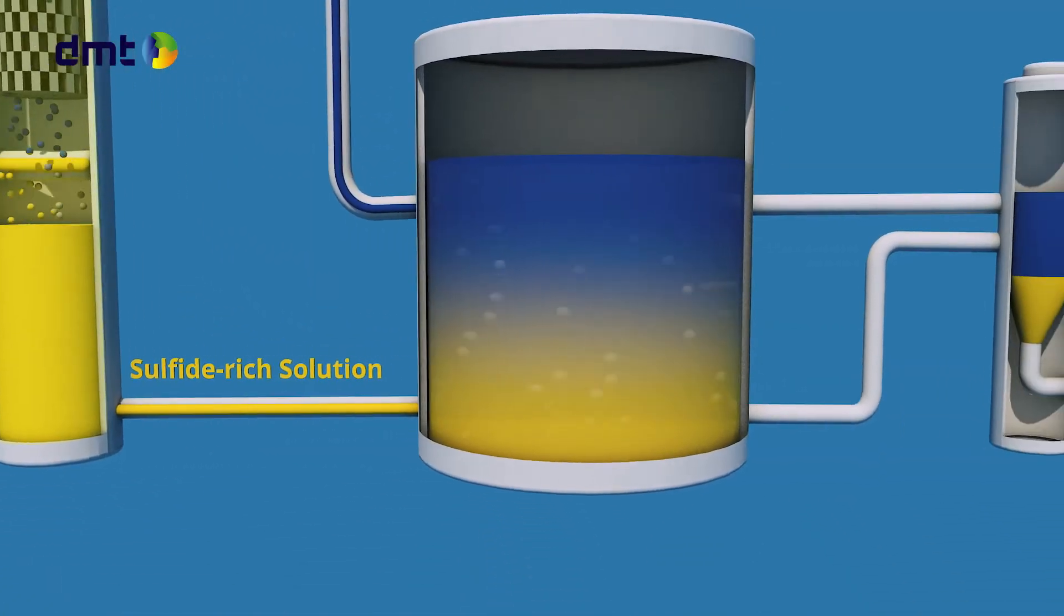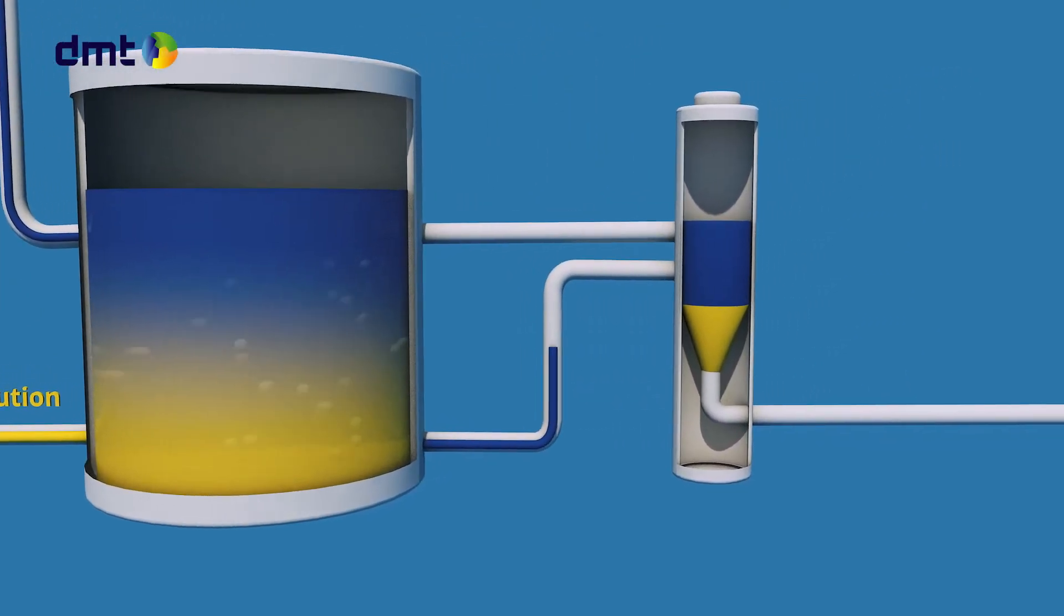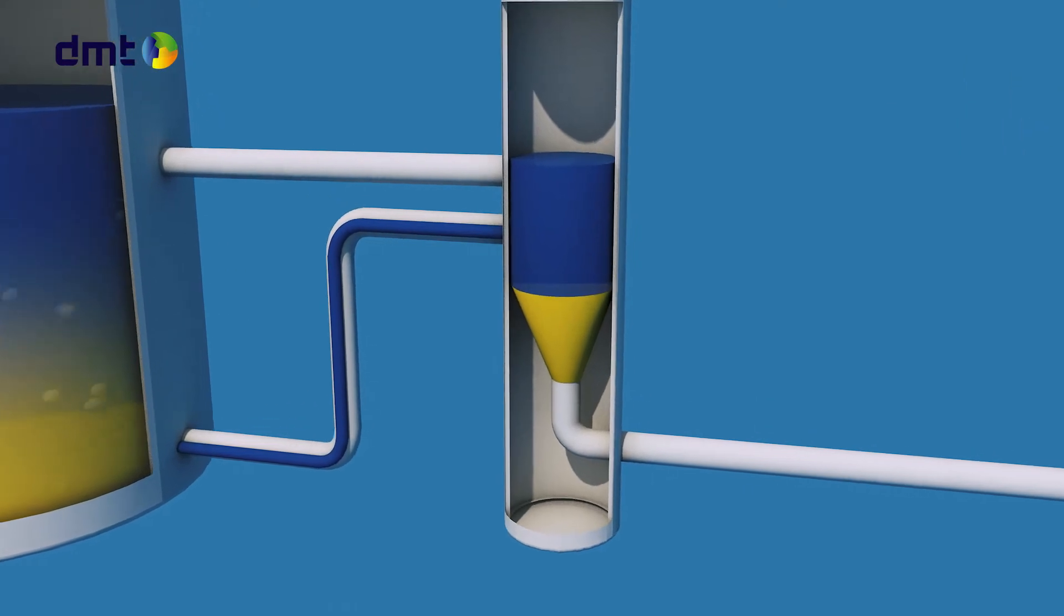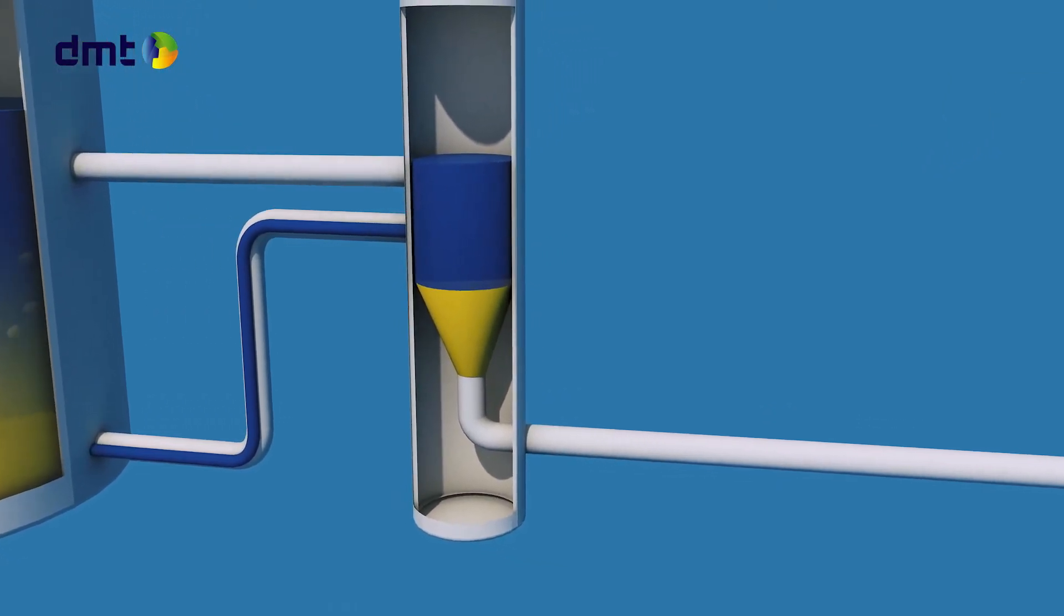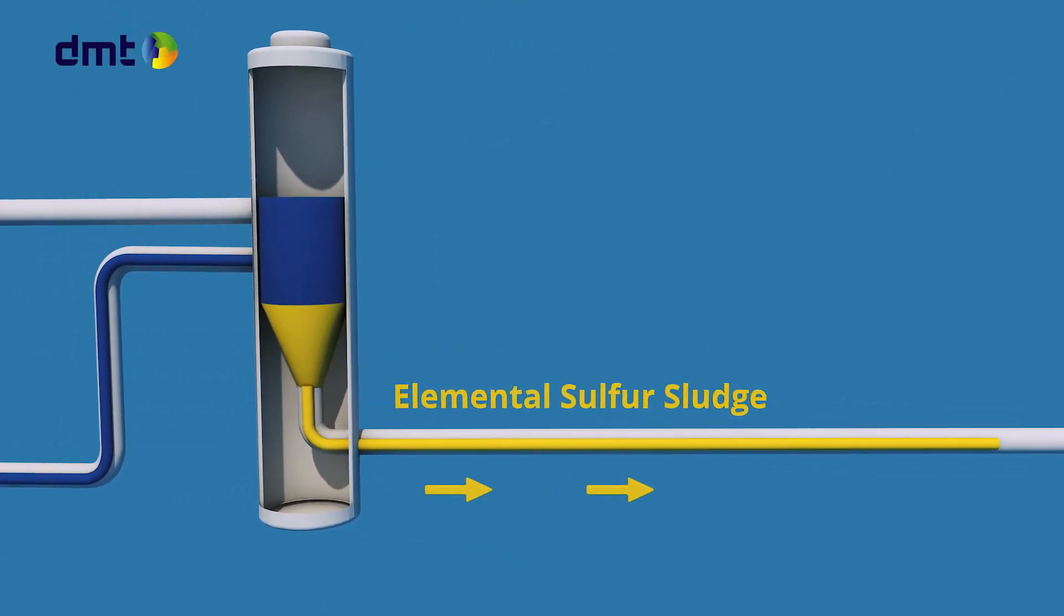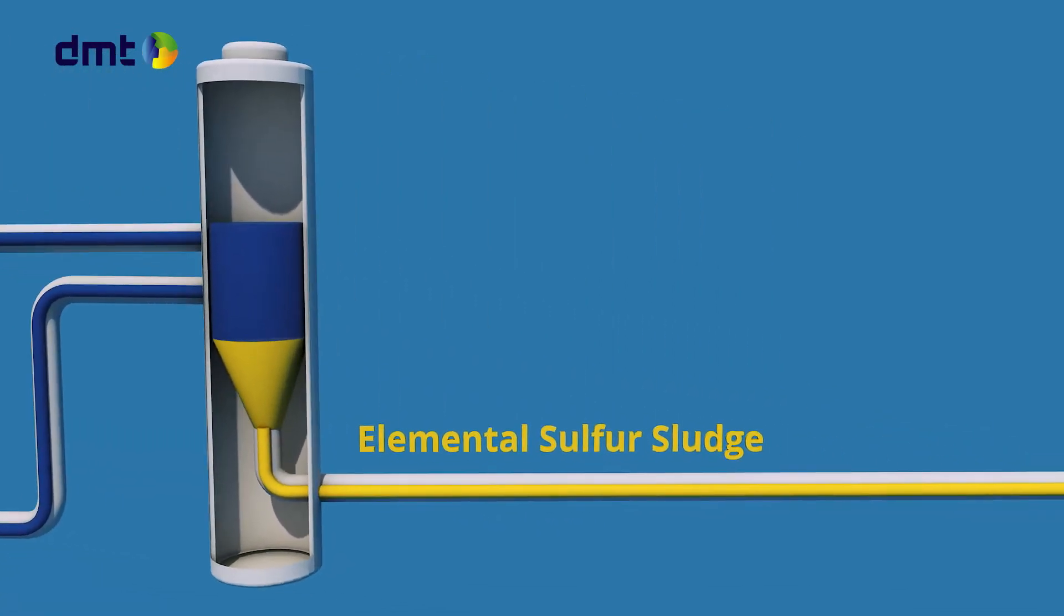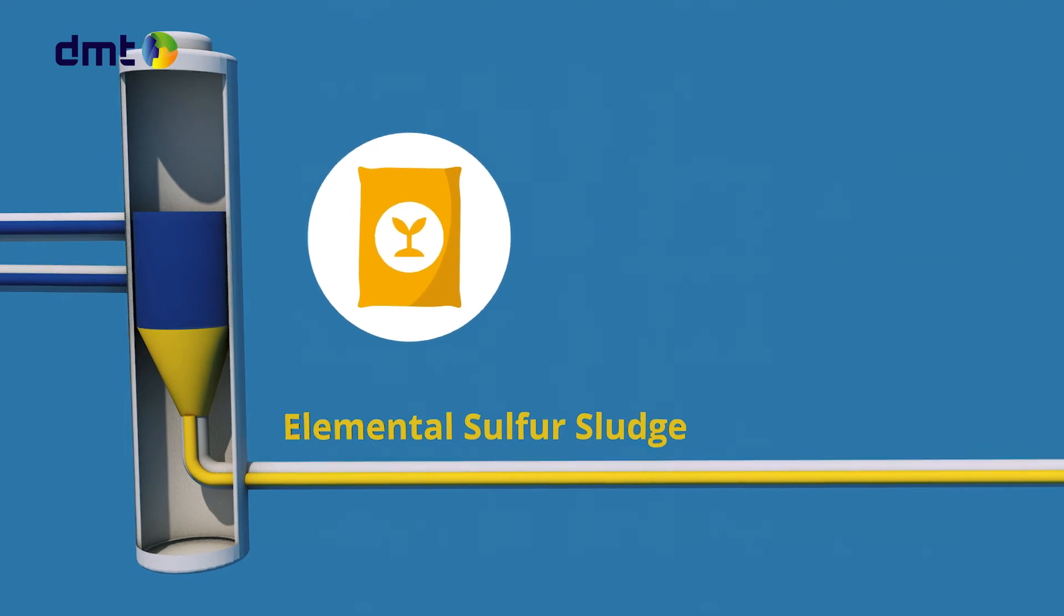The settler section: part of the wash solution is pumped to a settler. The weight of the sulfur settles down and concentrates to a ten to fifteen percent sulfur slurry. The settler overflow is reused in the process. The biosulfur produced can be used as a very effective fertilizer.